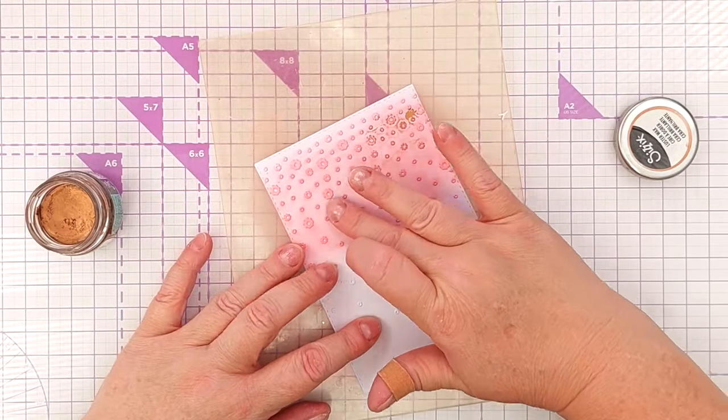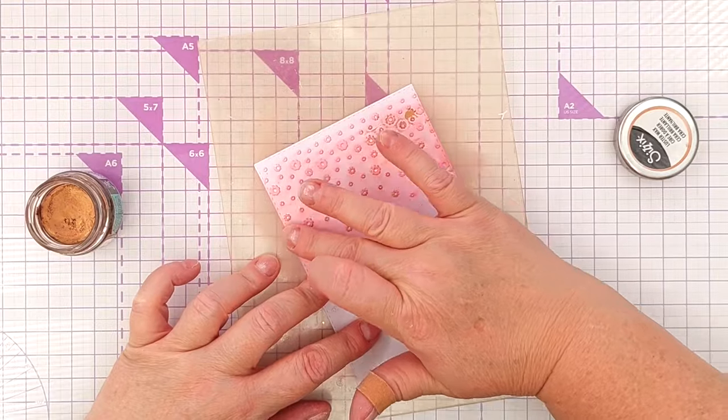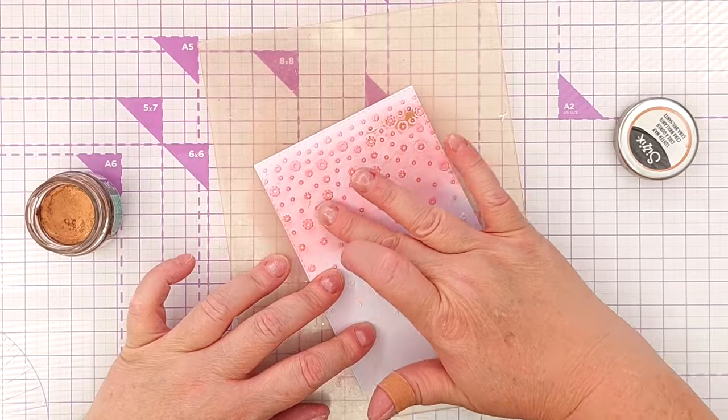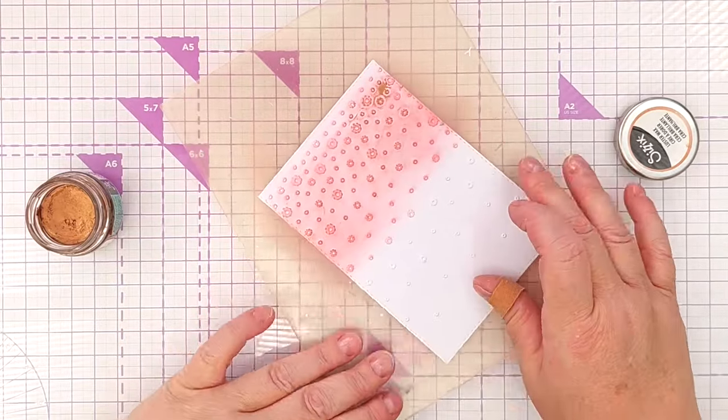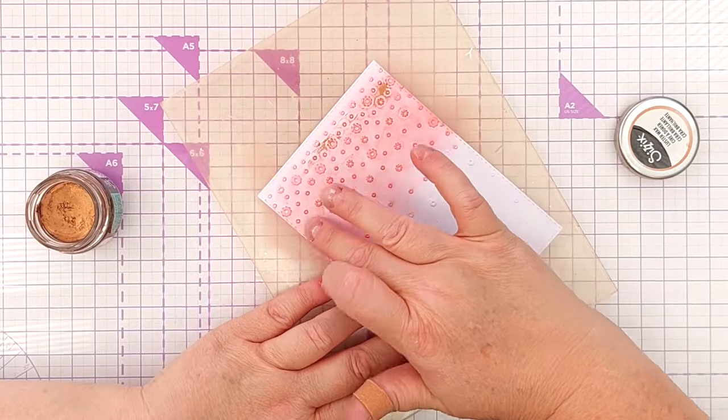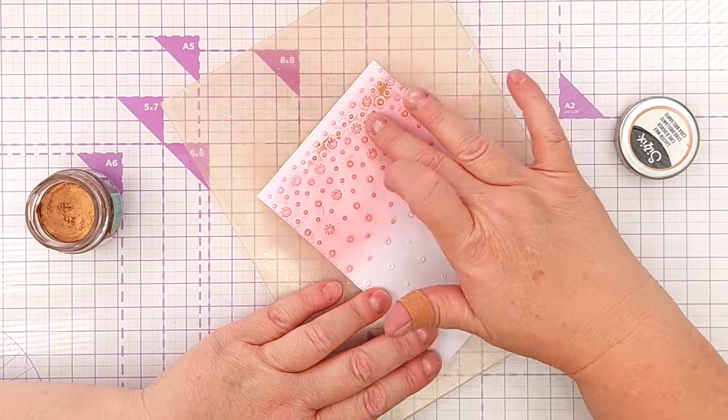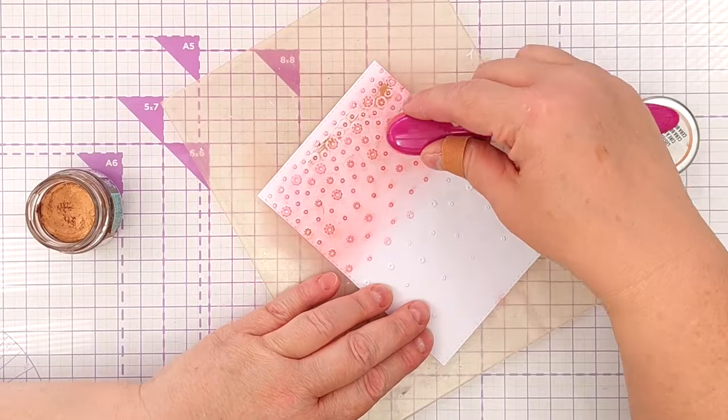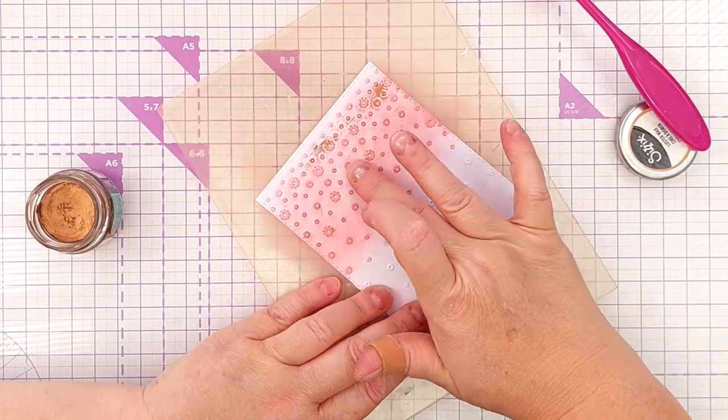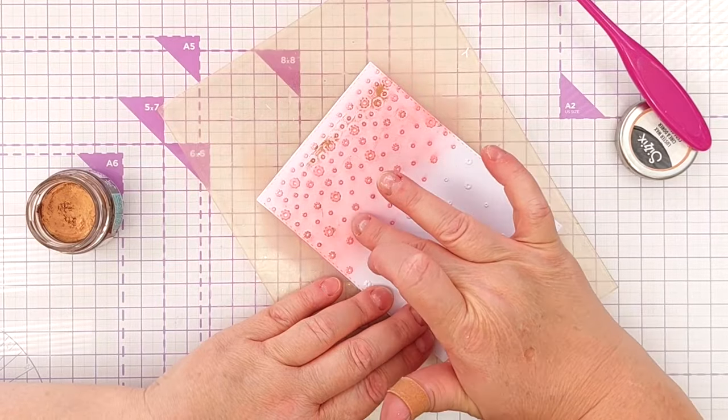To add a little bit of luster to the raised areas of this embossed panel I'm using Sizzix luster wax in rose gold and just gently burnishing it over the flowers with my finger. I do bring in a bit of extra ink and just go over it with my blending brush and I also burnish it a little bit with a microfiber cloth to get off any excess luster wax.